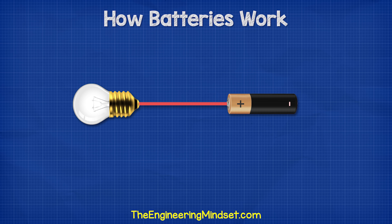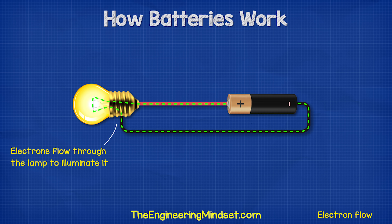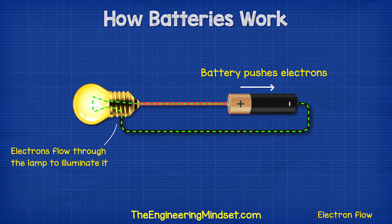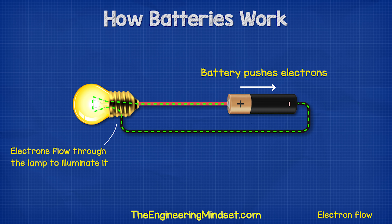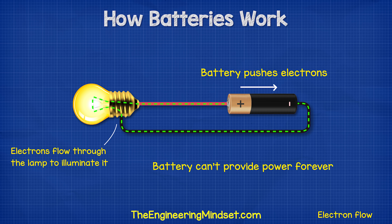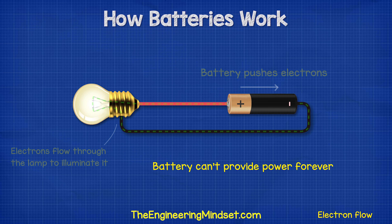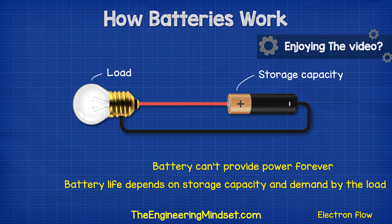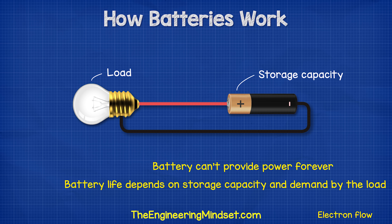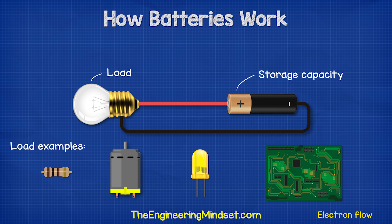If we look at a simple battery and lamp circuit, to illuminate the lamp we need lots of electrons to flow through it. The battery provides the pushing force which allows electrons to flow through the lamp. We simply connect the lamp across the positive and negative terminals to complete the circuit. The battery can only push electrons for a certain amount of time — this depends on how much energy is stored and how much is demanded by the load. In an electrical circuit, the load means any component which requires electricity to work, such as resistors, LEDs, DC motors, or even entire circuit boards.